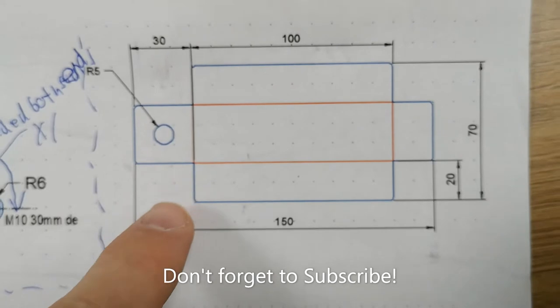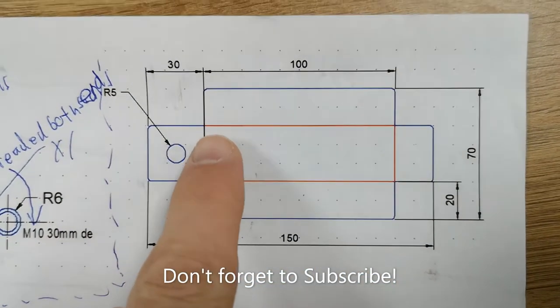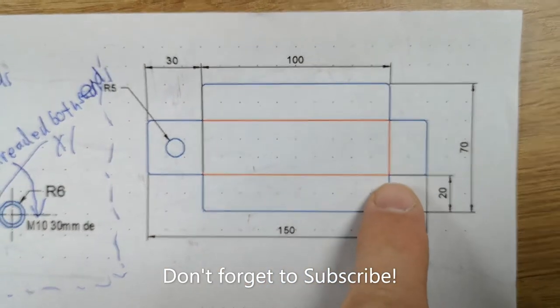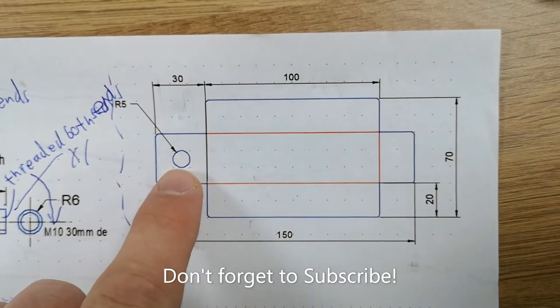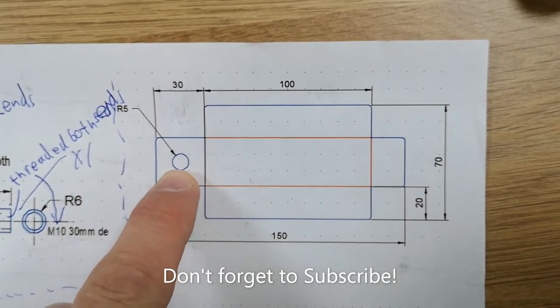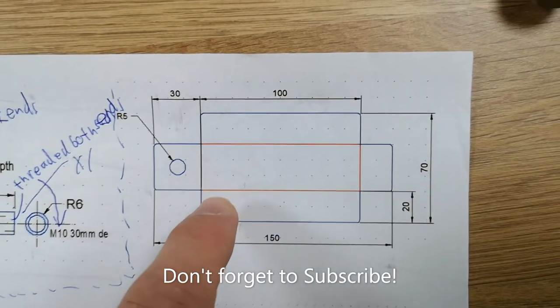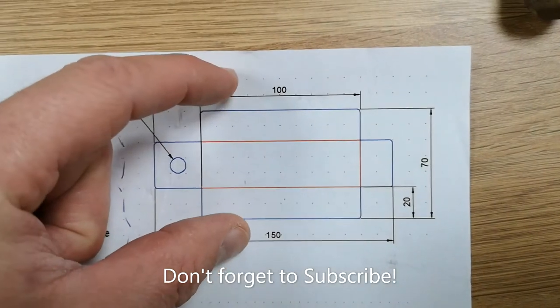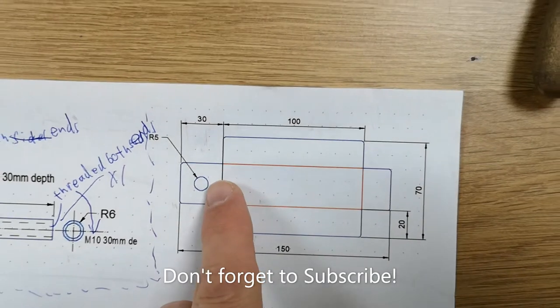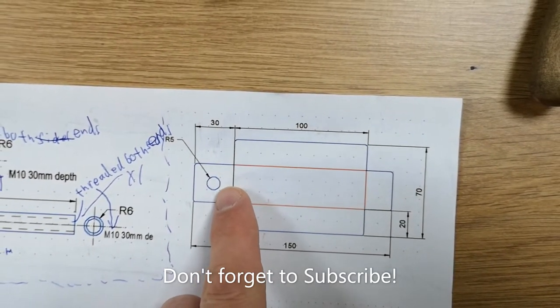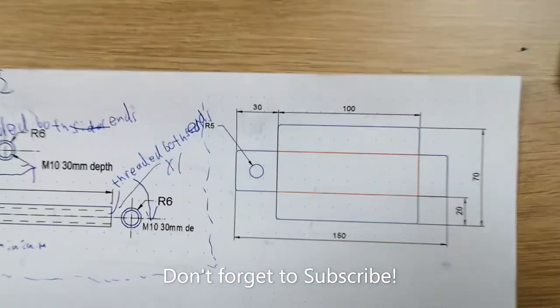The blue lines are the cut lines, the outside lines, and then the red lines are fold lines. So these red lines will be scribed. The circle there is a hole, radius 5 for the M10 bolt to go through, so that way when this net is folded and it becomes the lampshade, you'll be able to just put the M10 nylon bolt through the hole and attach it into the threaded side of the long arm.